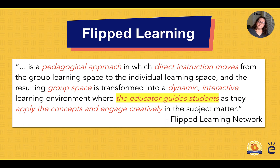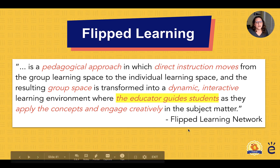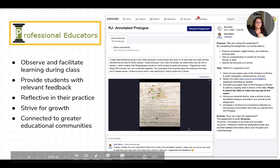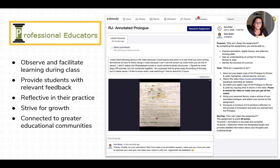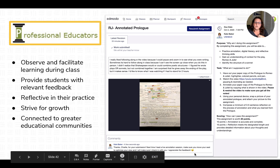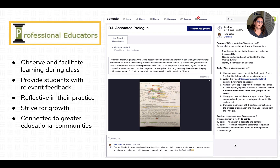We have one pillar left — the P of Professional Educator. In this part of the flipped learning definition, we look at how the educator guides students as part of the learning process. For being a professional educator, we want to observe and facilitate learning during class, provide students with relevant feedback, be reflective in our own practice, strive for the growth of our students and ourselves, and be connected to a greater educational community. When providing feedback for students in an Edmodo assignment, we can do comments for that one-on-one personal conversation — whether in textual format, video, or in-person — to keep the learning happening.